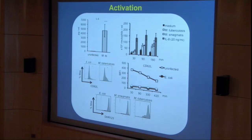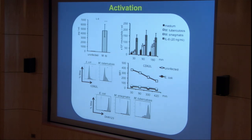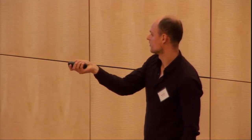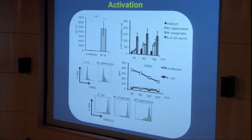Another marker for neutrophil activation is the loss of CD62L on the surface. If you incubate them with E. coli you get a dramatic drop of CD62L on the surface, and the same thing happens with TB — you lose CD62L, which is a sign of cell activation. We also looked at ROS production using DHR123, which becomes fluorescent in contact with reactive oxygen species. E. coli served as a control showing a shift in DHR123 fluorescence, and the same happened with M. smegmatis and also with TB.